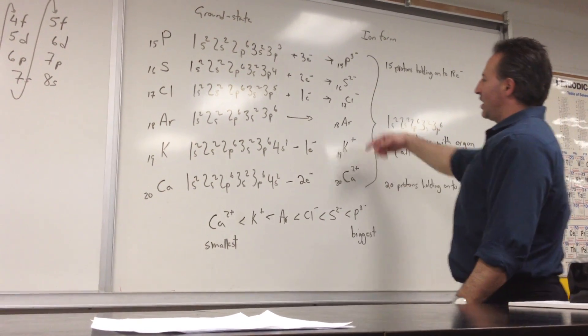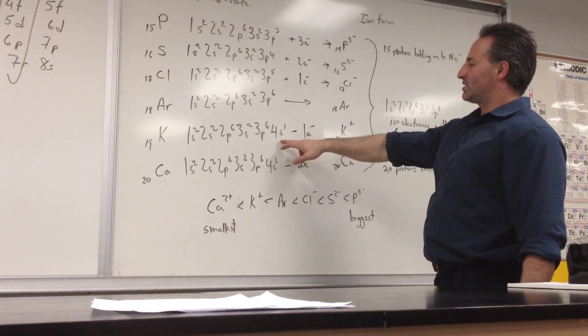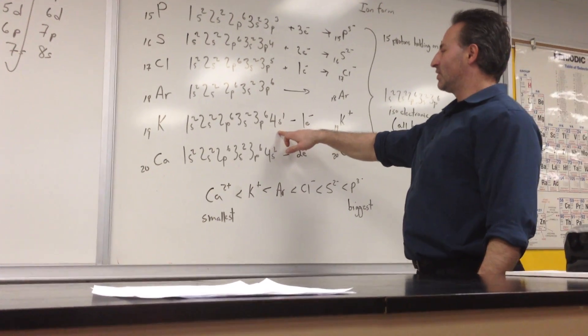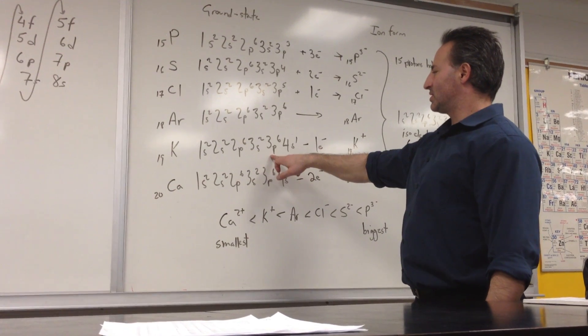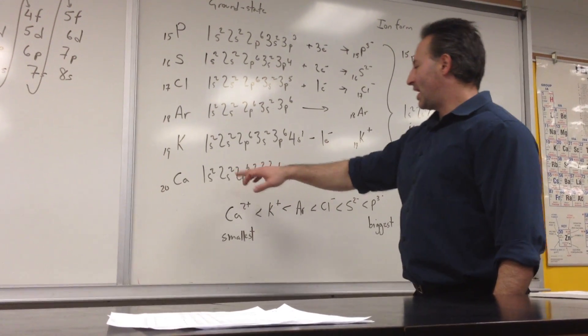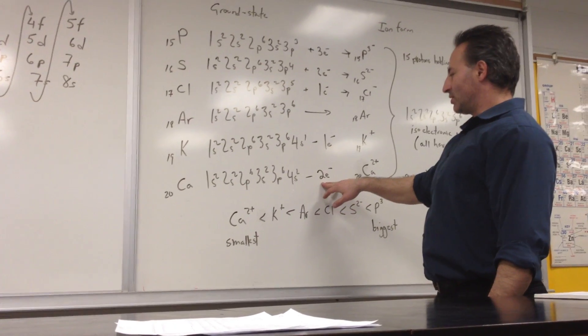On the other side, we have potassium, which ends in the 4S1 configuration. If it loses that one electron, it'll also have a 3P6 configuration. And calcium achieves the same by losing two electrons.